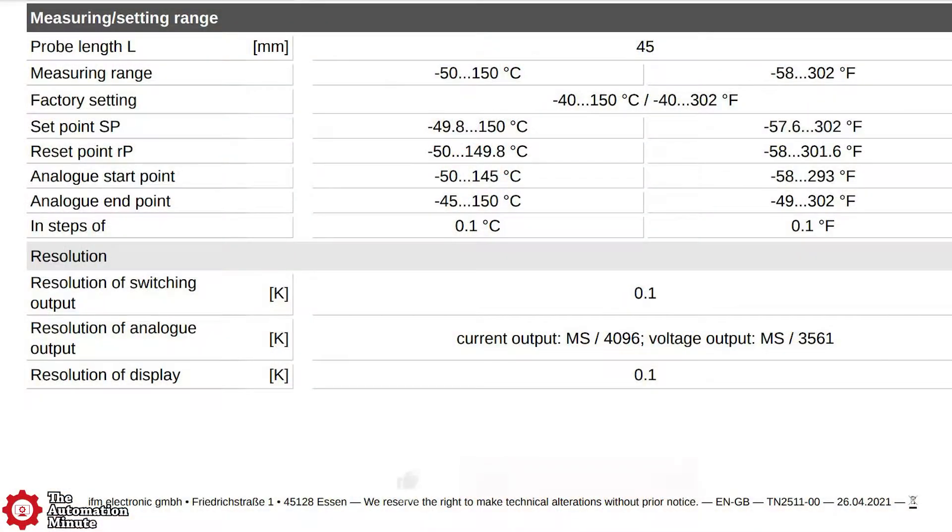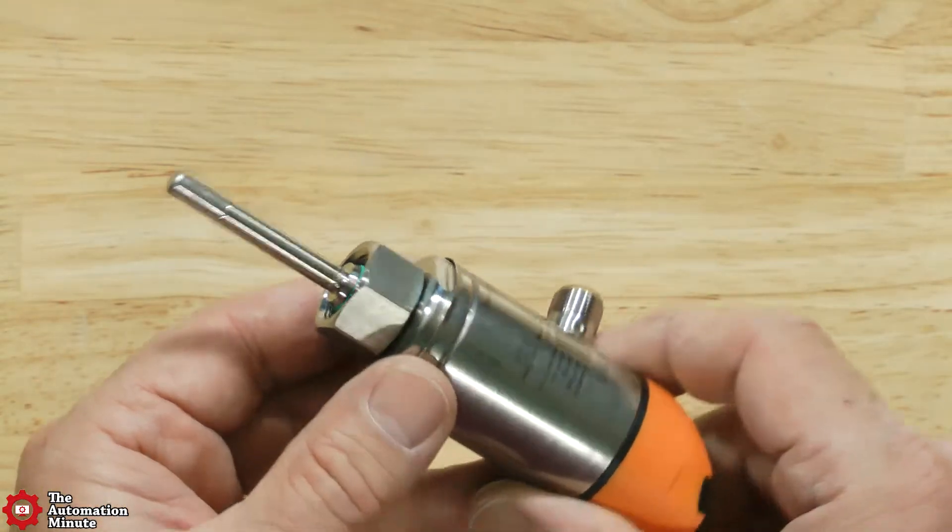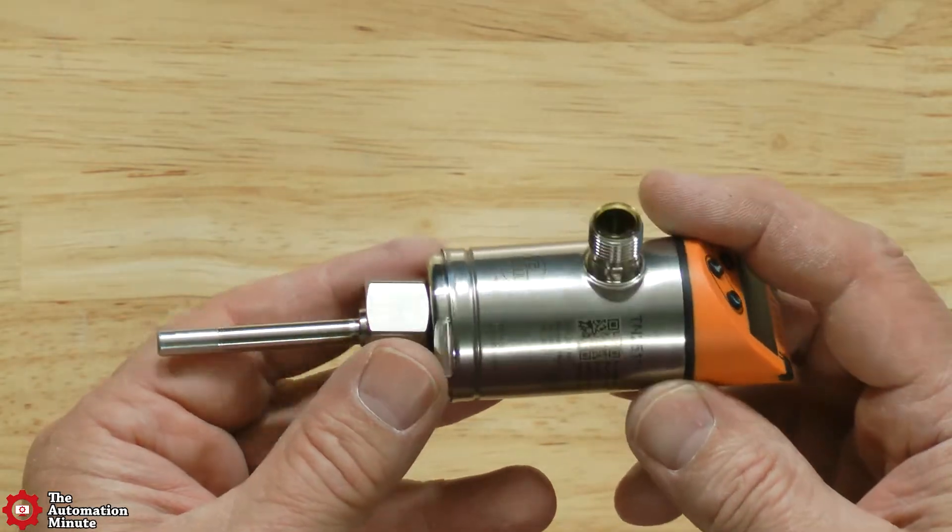Today we're taking a first look at the TN2511 temperature sensor from IFM with a temperature measuring range of minus 50 to 150 degrees Celsius, an operating temperature of minus 25 to 80°C, and a pressure rating of up to 300 bars.